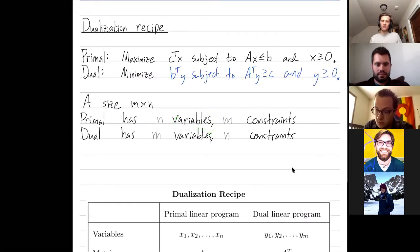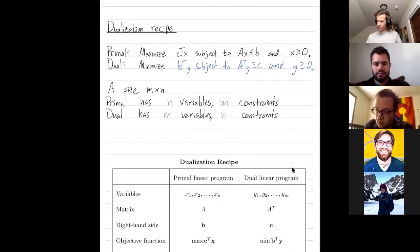Keep that in mind because in this dualization recipe the direction of these inequalities is going to tell you the direction of these inequalities because we have m constraints in the primal and m variables in the dual and the direction of these inequalities is going to tell you the direction of these inequalities because our n variables in the primal sort of correspond to our n constraints.